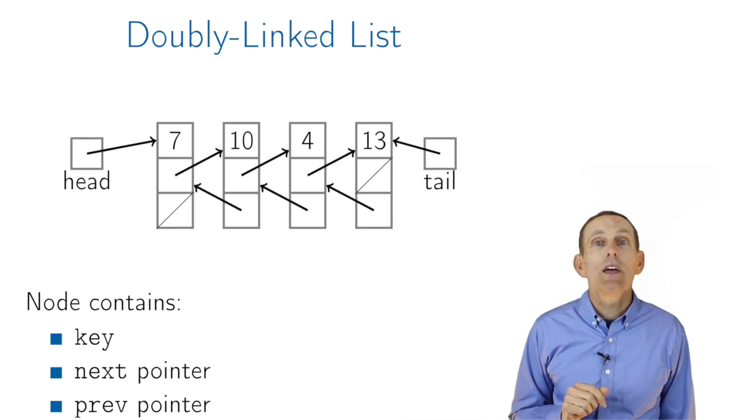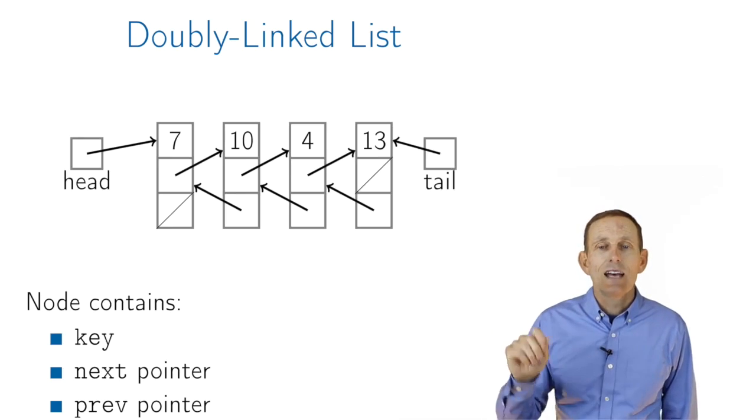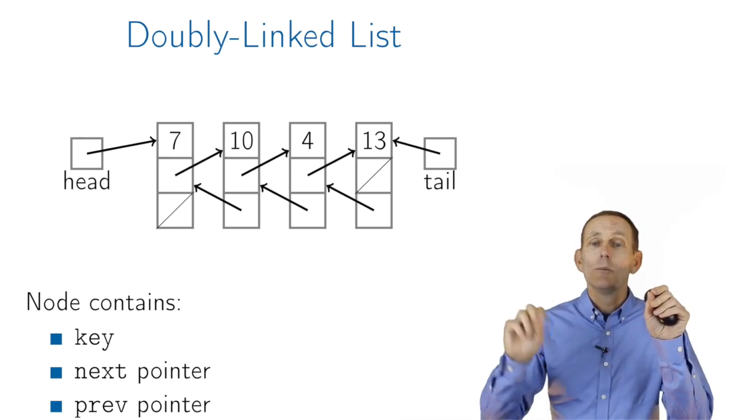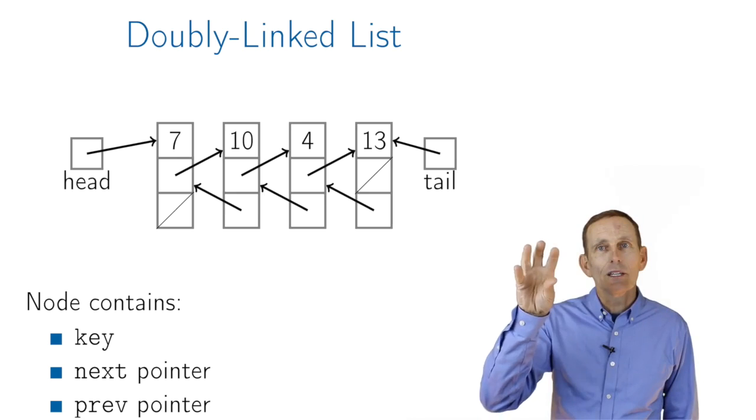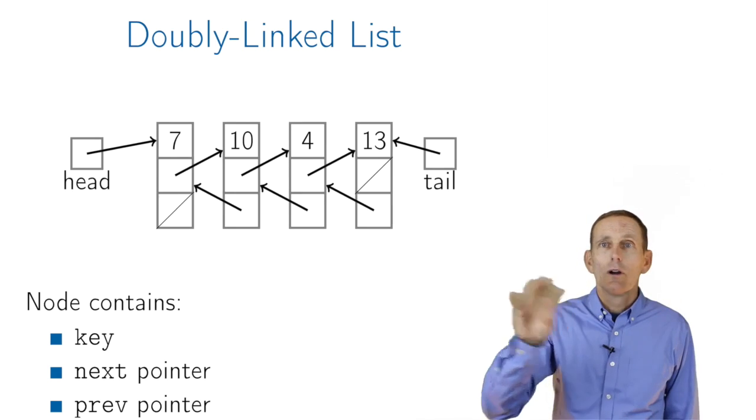This shows, for example, that the 10 element has a next pointer that points to 4, but a previous pointer that points to 7. So at any node, we can either go forward or we can go backwards.